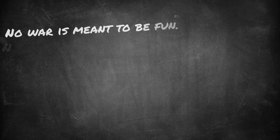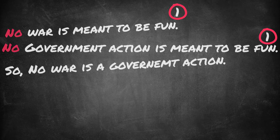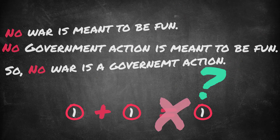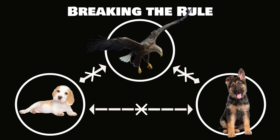Now try this: no war is meant to be fun; no government action is meant to be fun; so no war is a government action. We have two negative premises and one negative conclusion — one plus one does not equal one. There's the problem. Notice we also have no issue with distribution, but both war and government action are simply excluded from the class of things meant to be fun, so we have no idea how they relate to each other. Simply: no beagle is a bird; no dog is a bird; so no beagle is a dog — all we know is beagles and dogs aren't birds.